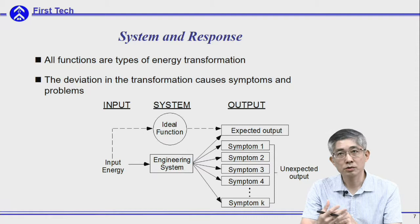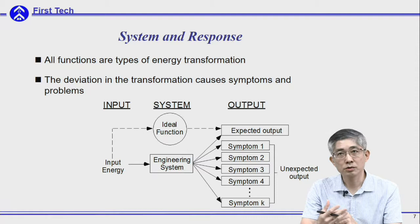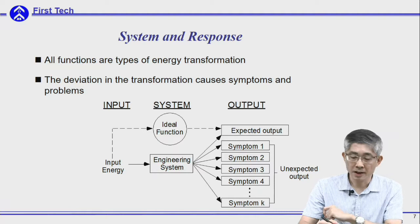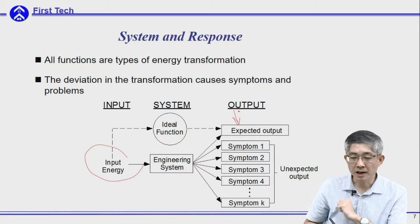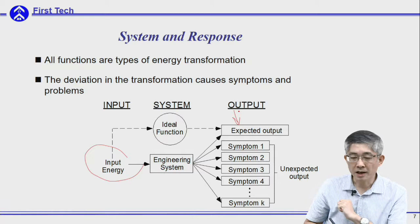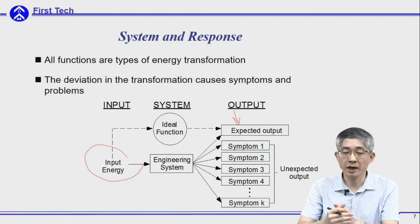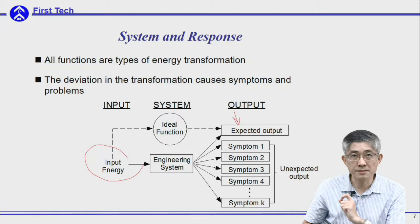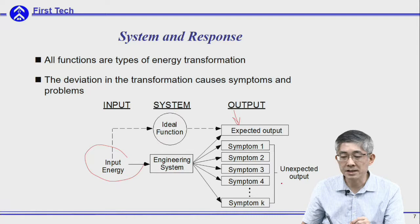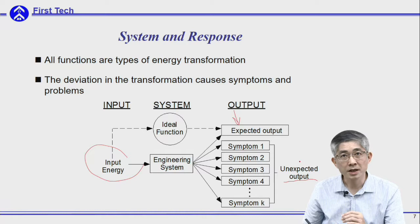Once you have the system and a response, you can treat the system as an energy transformation — it transforms input energy into the intended output. Based on the engineering system, if it is an ideal function, then it can transfer all the input energy to the intended output energy. However, there are some imperfections in engineering systems, so some energy will be transferred to unexpected output — we call it symptoms. In a good design, we would like to reduce the amount of unexpected output as small as possible.